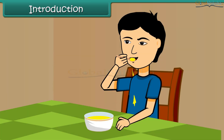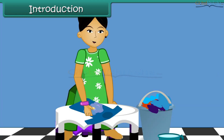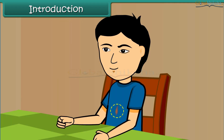While eating, some curry falls on Rishi's shirt. He rushes to clean the stain of turmeric with soap. But to his surprise, the stain becomes orange-red after washing with soap. How did the stain change color on applying soap? Let us find out in this lesson what caused this color change.